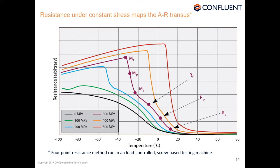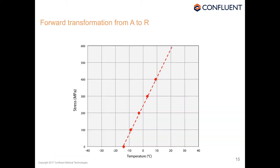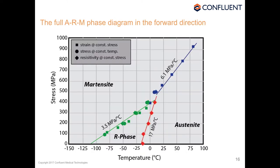Plotting all the data including the R phase transformation, focusing on when R phase forms from austenite — the peak or most active temperature — we get a nice straight line, very steep. Superimposing these data points on the phase diagram, it's starting to look like a real phase diagram: austenite as the high-entropy phase, R phase as an intermediate phase equivalent to liquid in water, and martensite as the low-entropy phase, with three boundaries visible.